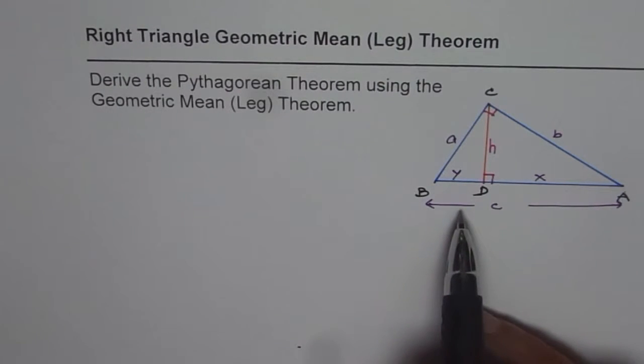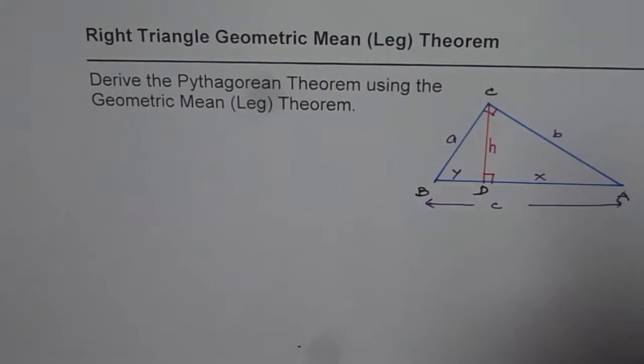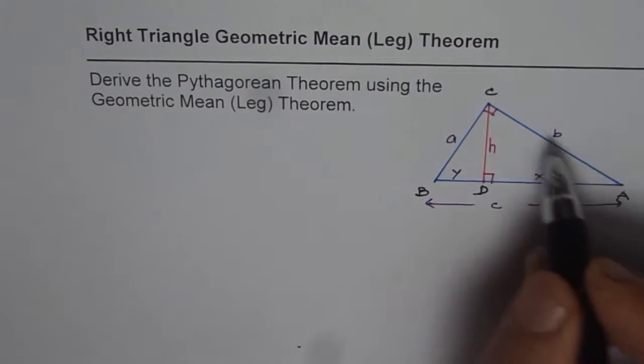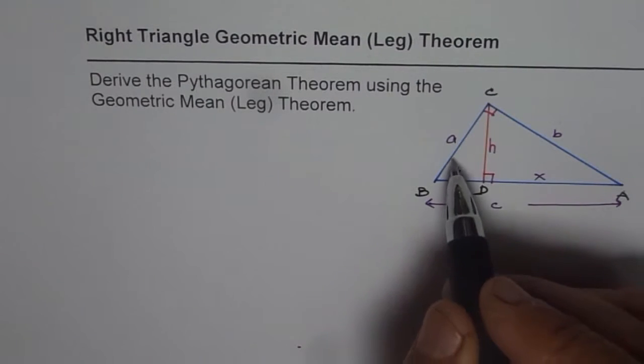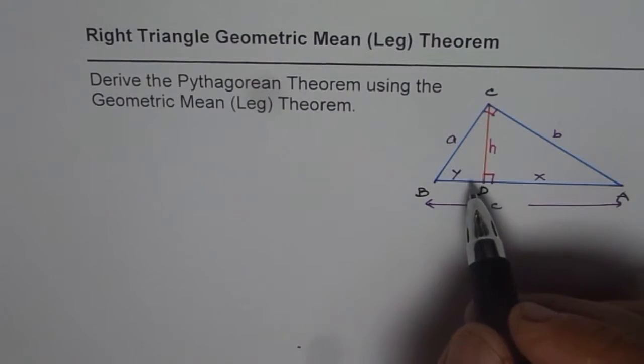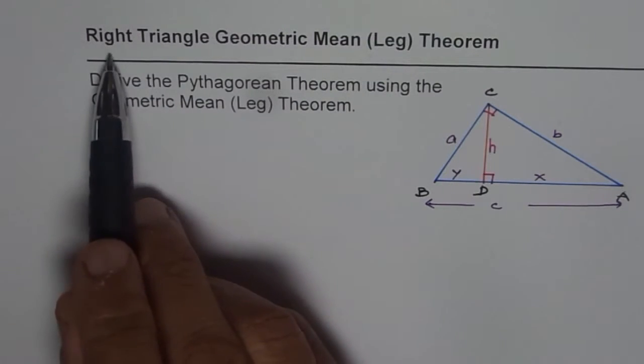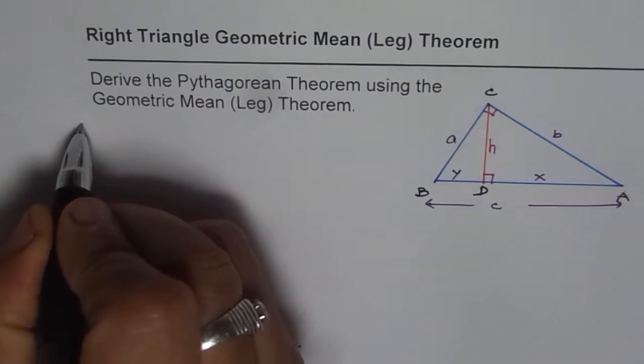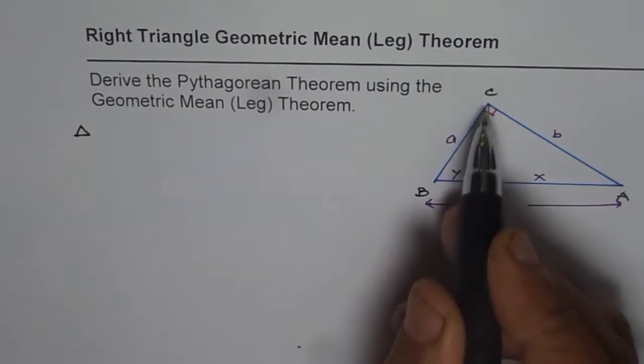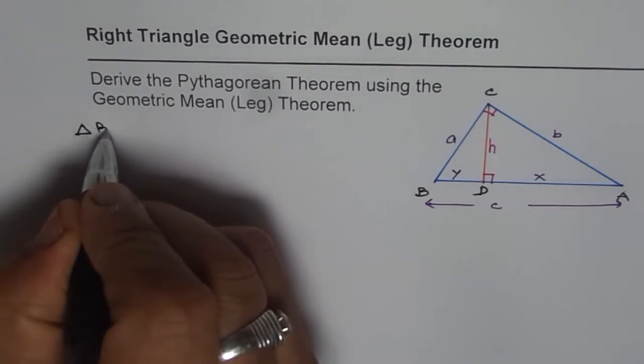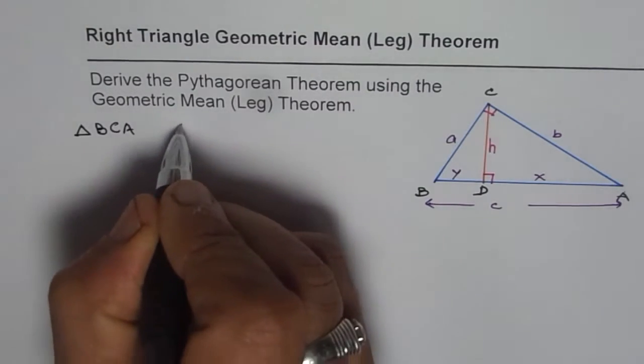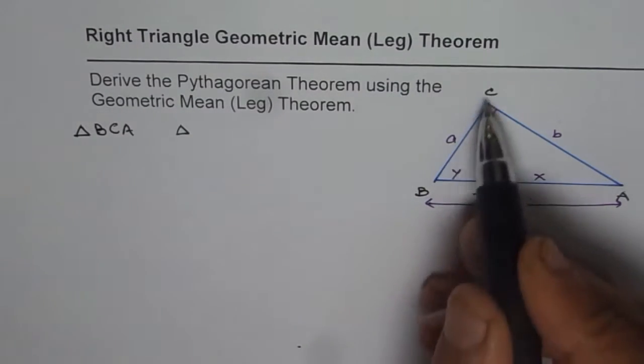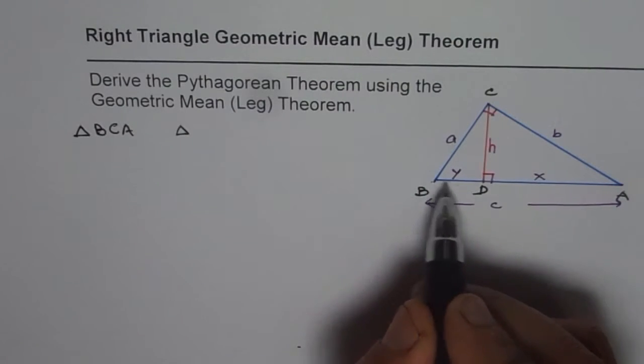Now let us consider the triangles, two set of triangles, the smaller ones with the bigger ones. We know they are similar. Let us prove it and then find the ratio of the sides to first derive right triangle geometric mean leg theorem. So if you consider the triangle BCA and the triangle, since we will take this one, BCA, C is the right triangle. So we will say BDC.